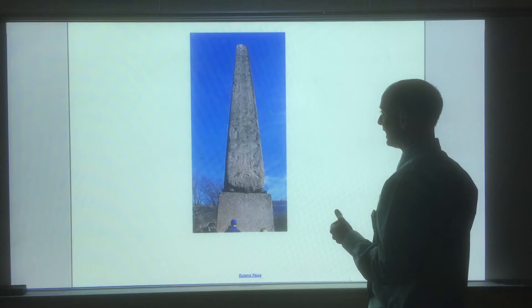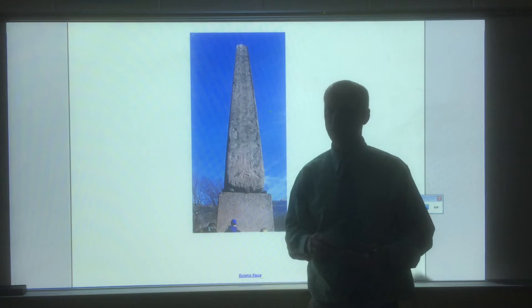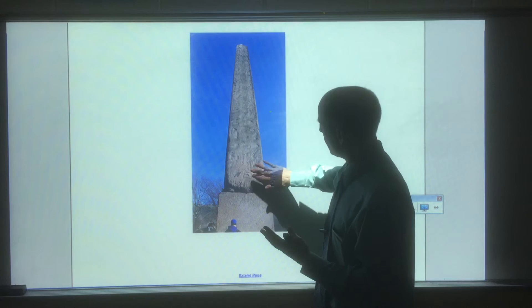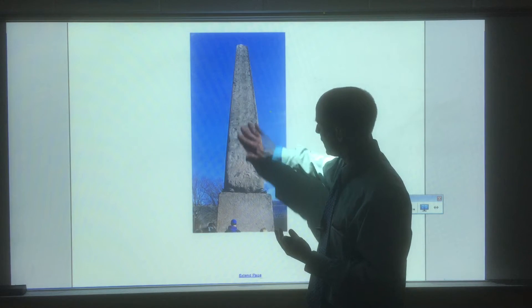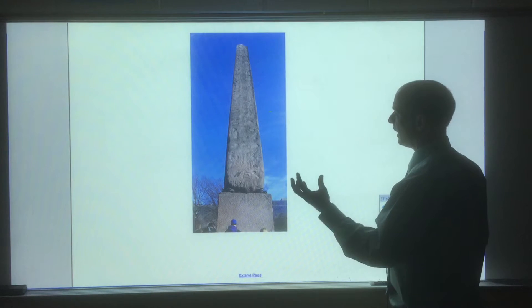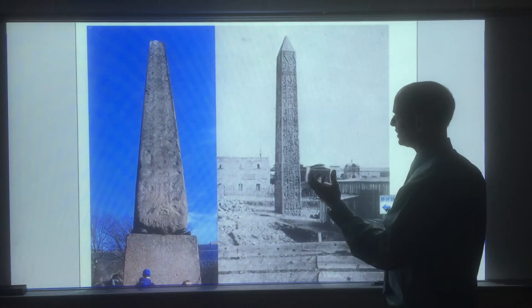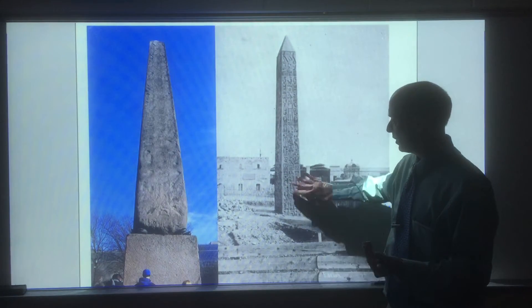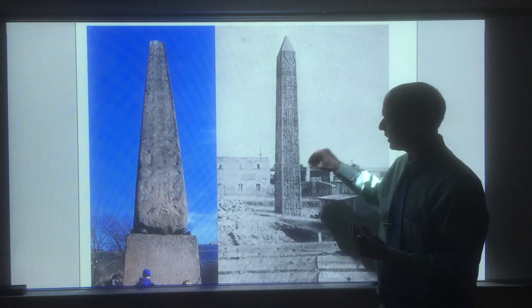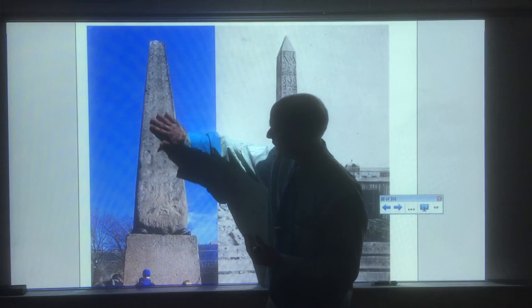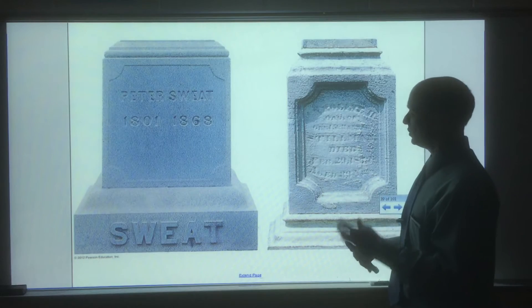An example of this chemical weathering is Cleopatra's Needle in New York City's Central Park. It used to have very clear, deep carvings, but over the years of exposure, those carvings are now much harder to see. You can see what it looked like before — the carvings were very deep and distinct and readable — and now they are very hard to read.